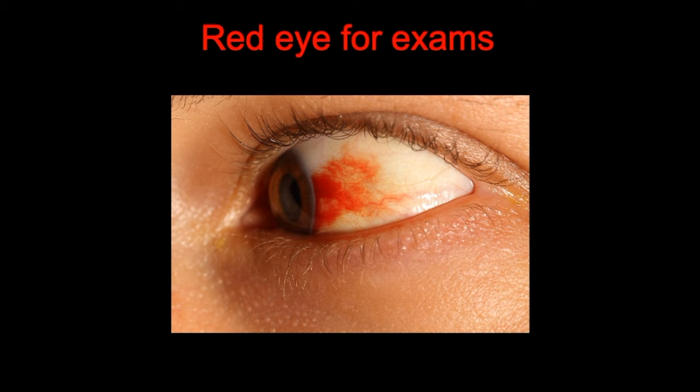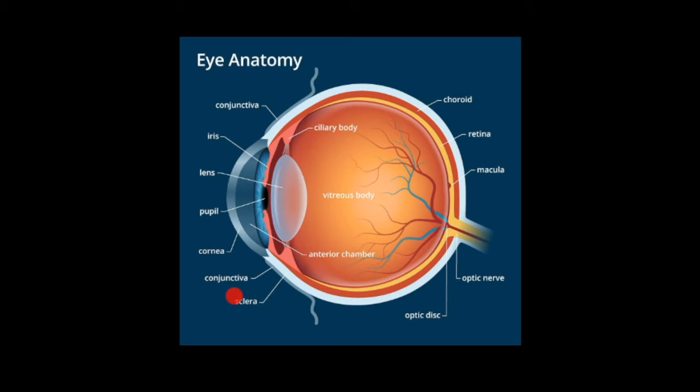Let's briefly look at the important anatomy. The conjunctiva is a clear thin membrane that covers the front part of the surface of the eye and the inner surface of the eyelids, and it contains lots of tiny blood vessels that can easily break. If these blood vessels break, the blood will leak between the conjunctiva and the sclera, which is the white part of the eye surrounding the eyeball almost like a protective layer.